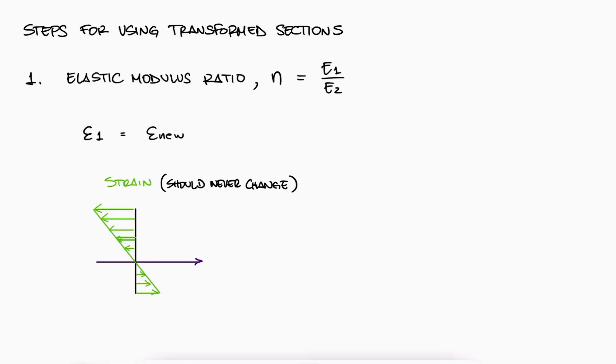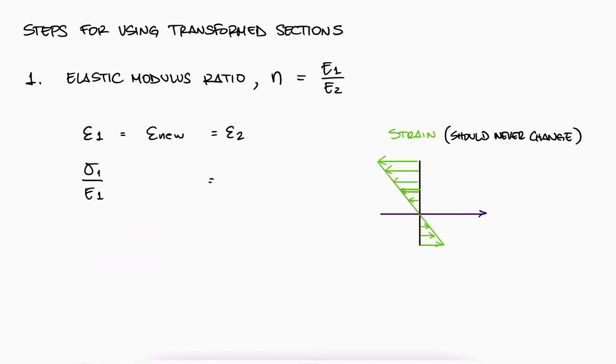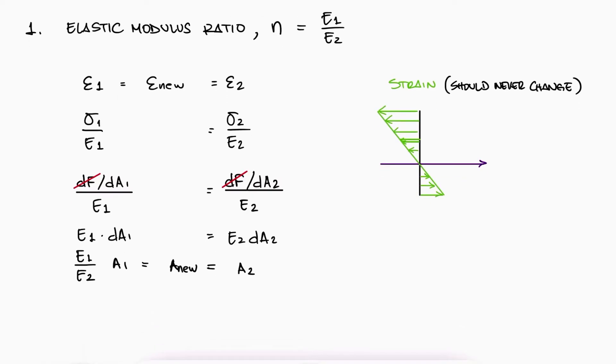The first step to use transformed sections to calculate stresses, or even beam deflections, in members made of two or more materials, commonly known here as composite materials, is to calculate the ratio between elastic moduli. If the current strain in material 1 has to be equal to the new strain when we transform it into material 2, and strain is the stress over the elastic modulus, and at the same time we know that the stress is the sum of all the forces over the sum of areas, we see that the dFs should not be changing before and after the transformation, and this means that the new area should be an E1 over E2 ratio times the original area. Following what we just stated about the height having to remain the same, the conclusion here is that the new width is the E1 over E2 ratio times the original width. This applies to whatever material you want to transform, as long as you call material 1 the material that's going to be transformed.